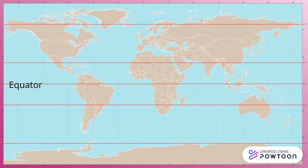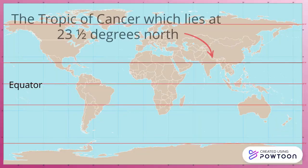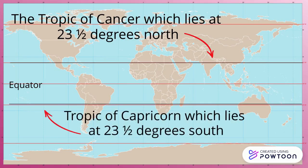The tropic lines: the Tropic of Cancer, which lies at 23.5 degrees north, and the Tropic of Capricorn, which lies at 23.5 degrees south.